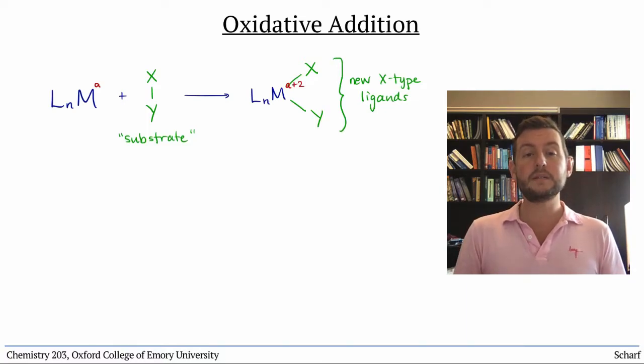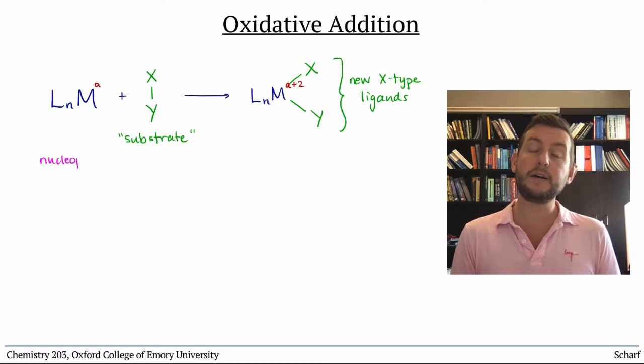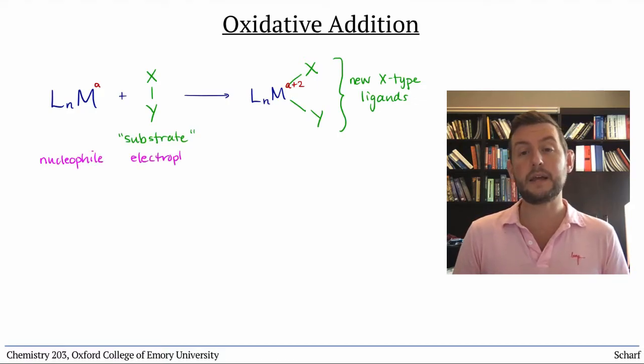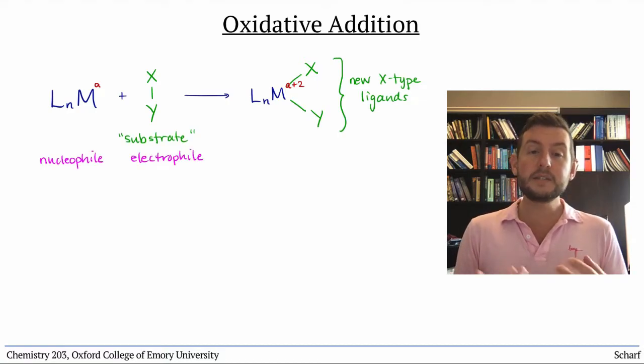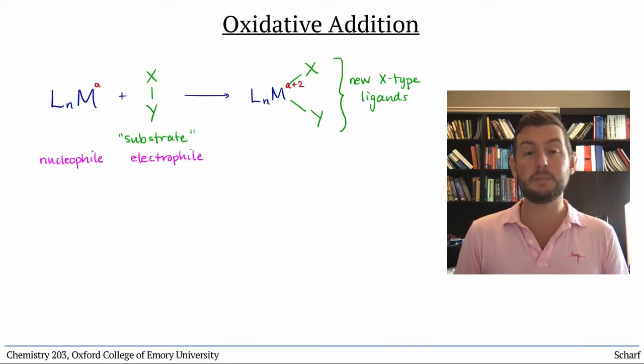In this reaction we consider the metal to be the nucleophile and the substrate to be the electrophile. Because the metal is acting as the nucleophile, it must have a minimum of two d electrons, which can be donated into the sigma star orbital of the bond being broken.